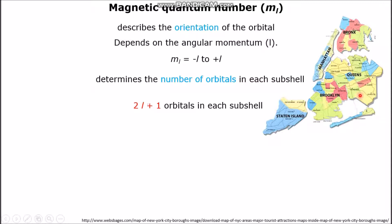So you have orbitals within sub-shells. A simple formula to calculate the number of orbitals in a sub-shell is simply 2 times L, which is the angular momentum, plus 1.